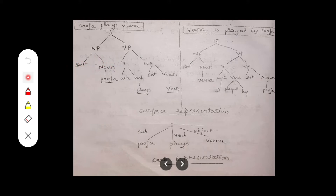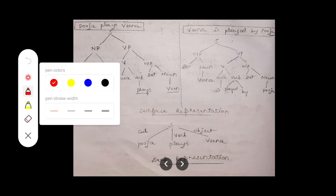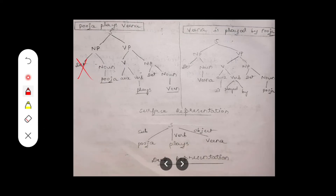A noun phrase is made up of a determiner and a noun. In the sentence 'Puja plays veena,' do we have any determiner before 'Puja' — like 'the,' 'a,' or 'an'? We don't, so we eliminate the determiner. The noun here is 'Puja,' so I have placed 'Puja' in the noun position.